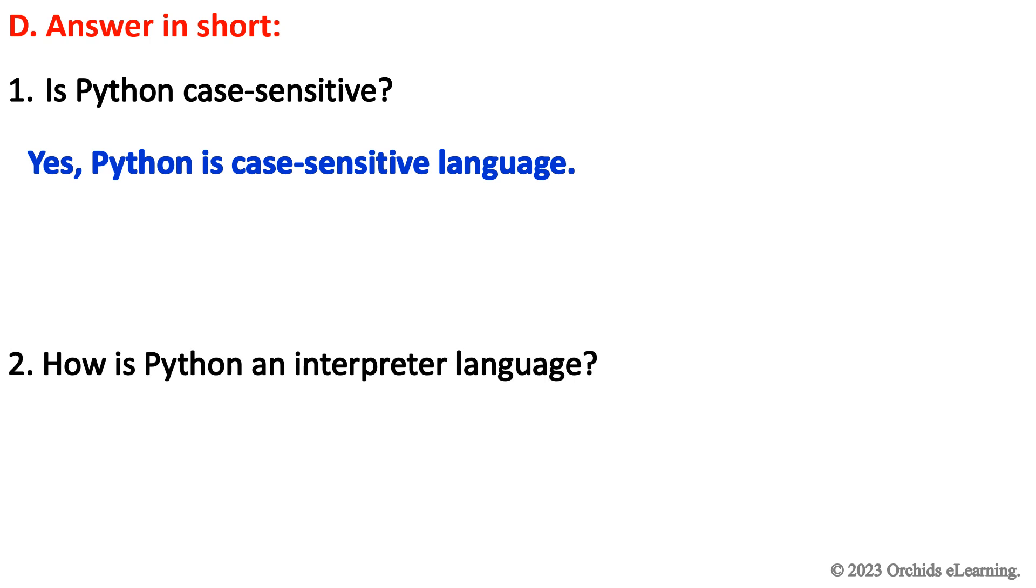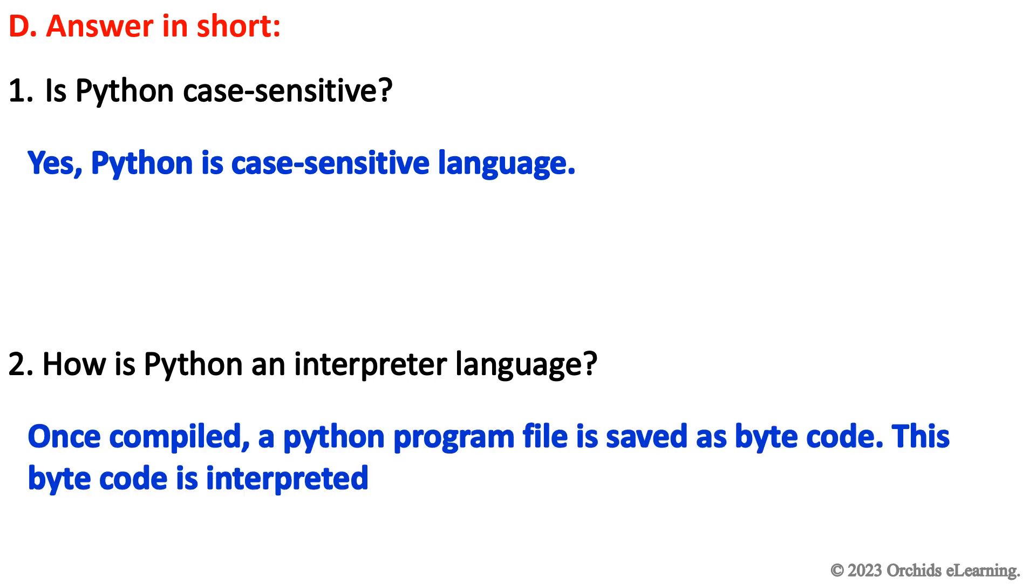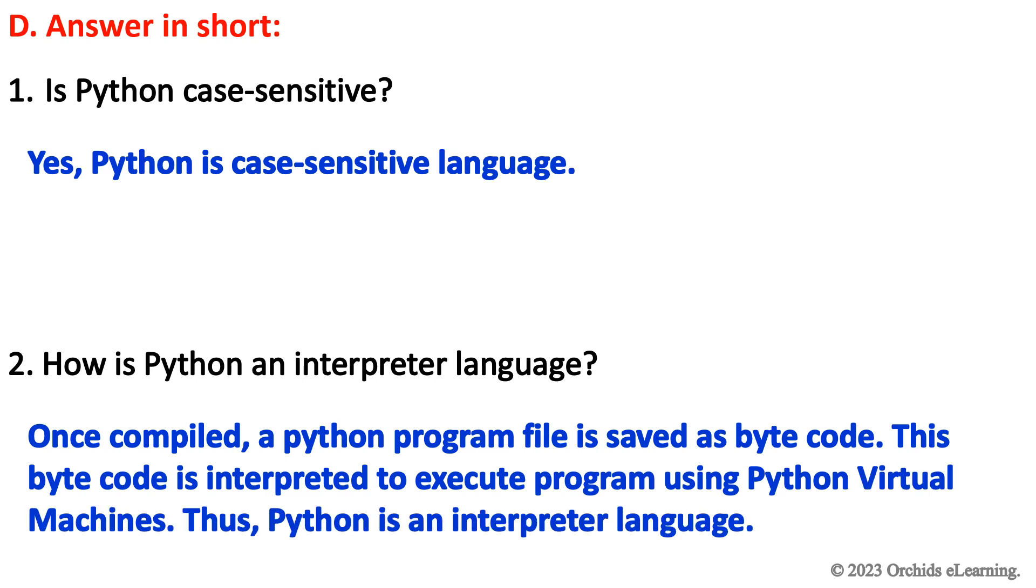How is Python an interpreter language? Once compiled, a Python program file is saved as bytecode. This bytecode is interpreted to execute a program using Python virtual machines. Thus Python is an interpreter language.